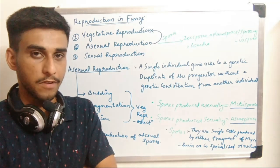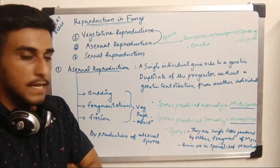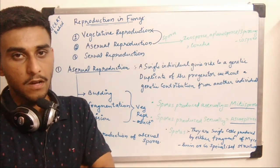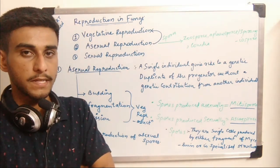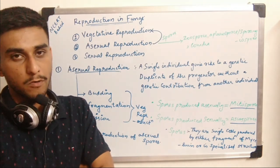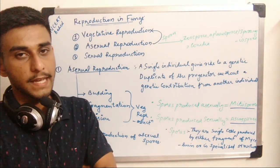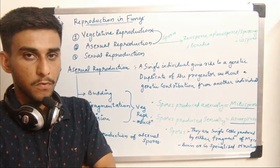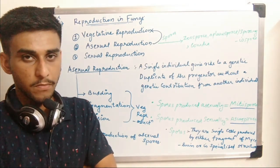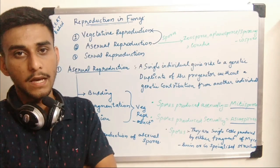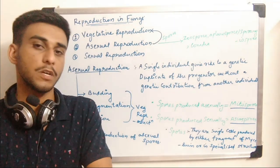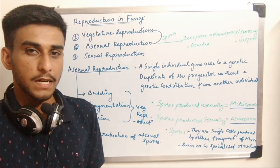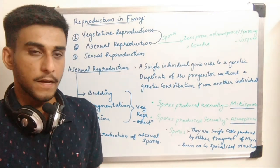In asexual reproduction, the true meaning is the production of the next generation by means of spores. The spores are carried out by different agents, and when the spore gets in contact with a suitable environment they germinate. The suitable environmental conditions for fungi include humidity and warm temperature.